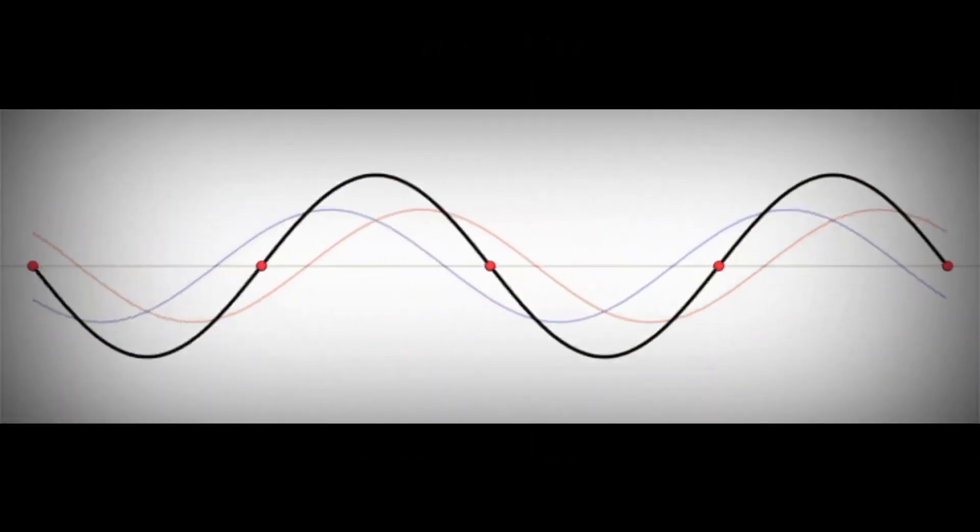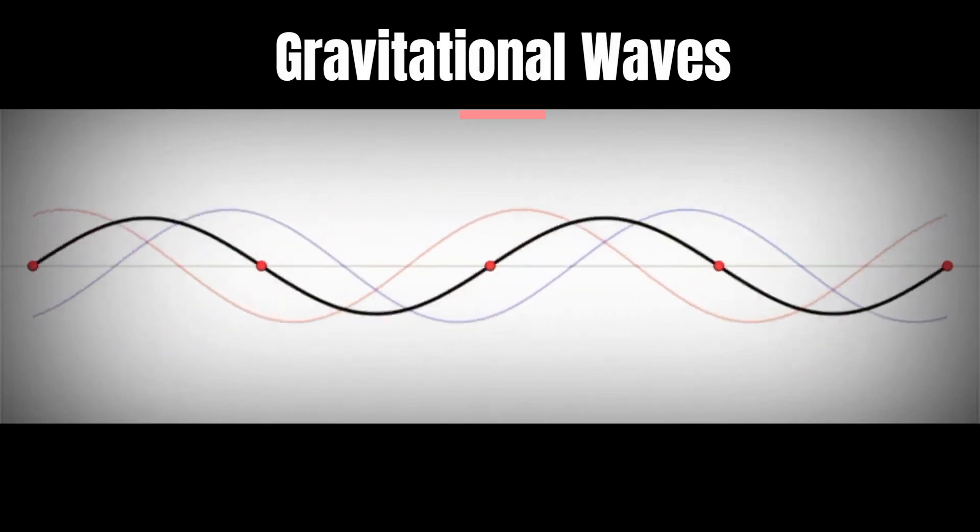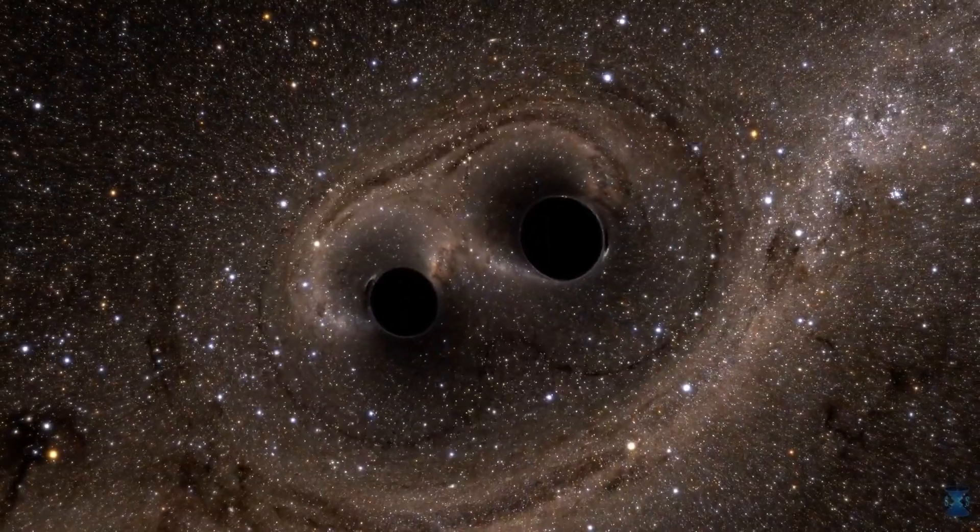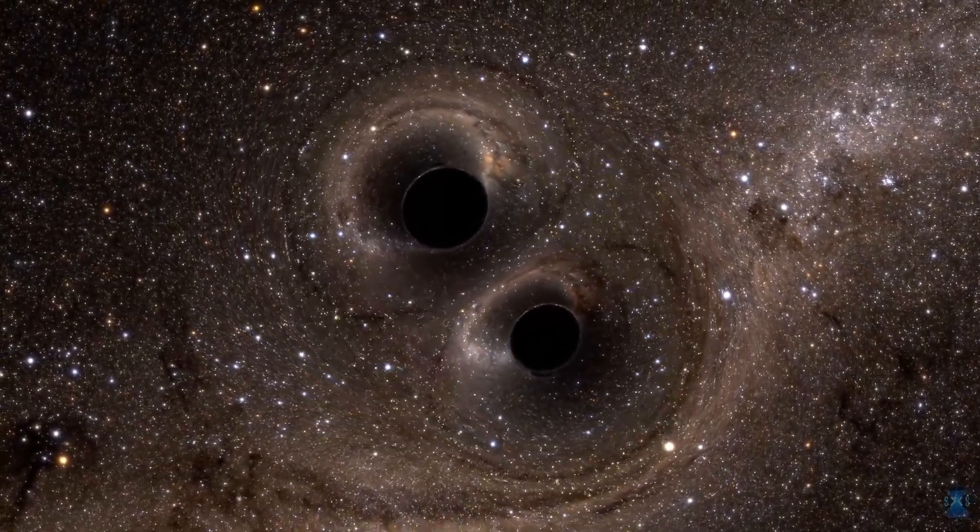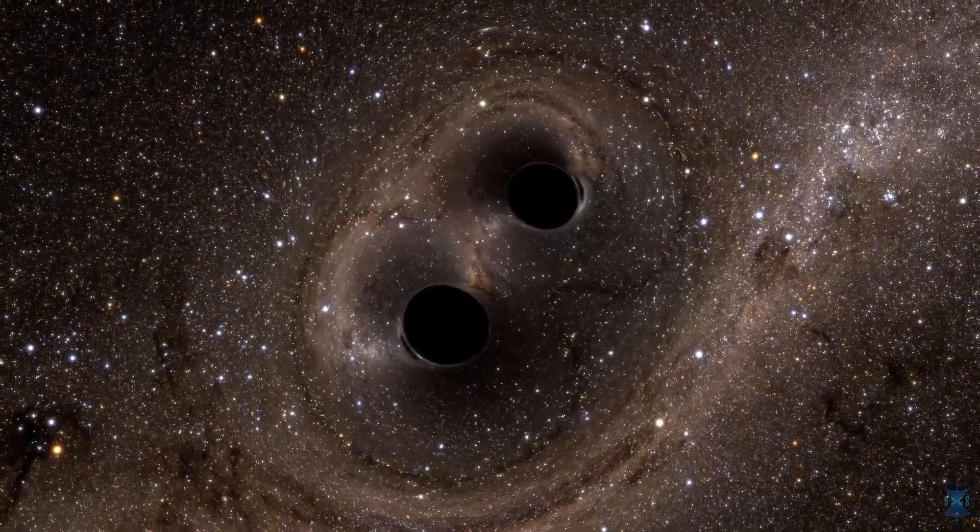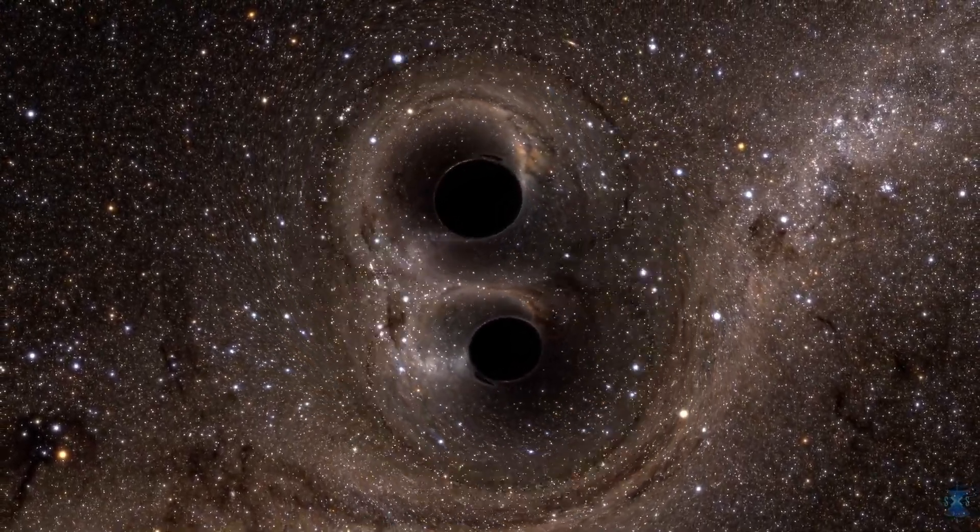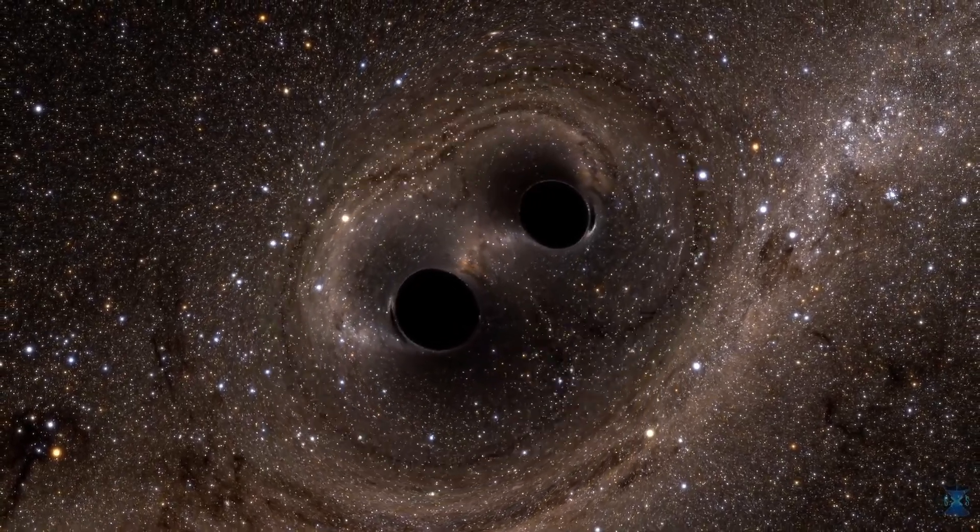Recent discoveries, such as the detection of gravitational waves, have provided strong evidence for the existence of space-time fabric. These ripples in space-time are produced when massive objects, like merging black holes or neutron stars, accelerate through space, causing disturbances in the fabric that propagate as waves.